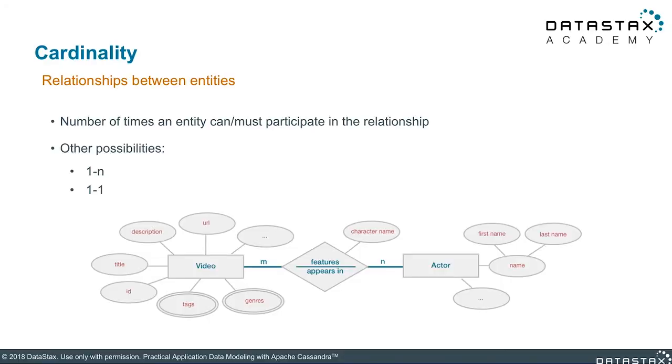How many times a particular object can participate in the relationship determines that object's cardinality within the relationship. For example, videos feature actors — each video will have several actors, and each actor can participate in several videos. Johnny Depp was in Pirates of the Caribbean 1, Pirates of the Caribbean 2, and so on. Pirates of the Caribbean has several actors such as Keira Knightley, Orlando Bloom, and also Johnny Depp. Why did we choose M and N here instead of M and M? The reason is every movie can have several actors, but the actor doesn't necessarily participate in the same number of movies as each movie has actors — the numbers can be different between the two.